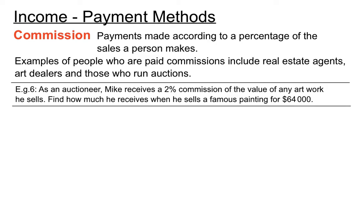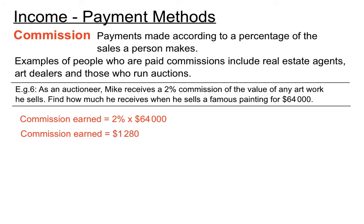Example: as an auctioneer, Mike receives 2% commission on the value of any artwork he sells. Find out how much he receives when he sells a famous painting for $64,000. He gets 2% of $64,000, and that goes into Mike's pay. Mike receives $1,280 in commission.